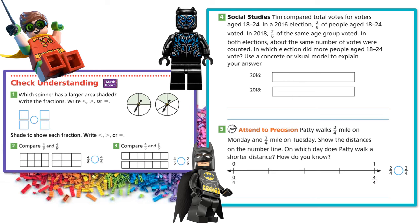Number one: which spinner has a larger area shaded? Write the fractions, then write less than, greater than, or equal to. On the first spinner, I have four equal parts, so my denominator is four. Two parts are shaded, so my numerator is two — two fourths. The second spinner has six equal parts, so my denominator is six, and two parts are shaded. If I'm breaking it into six parts instead of four, those parts become smaller. So two fourths is greater than two sixths.